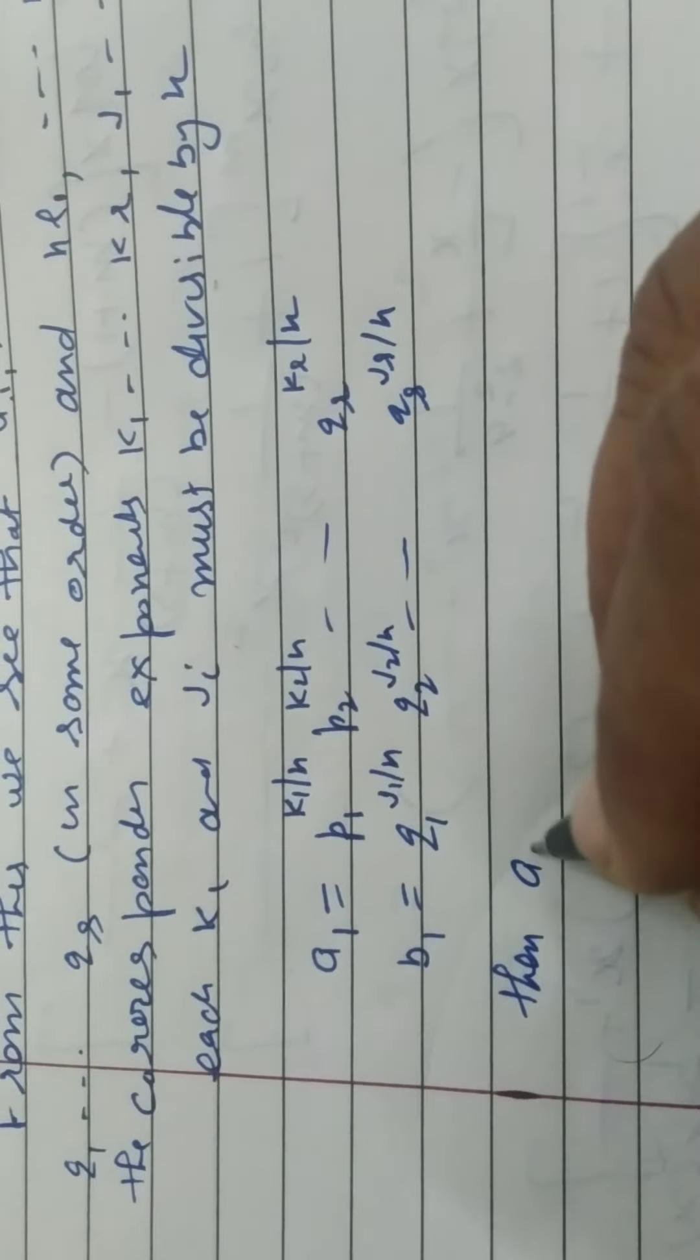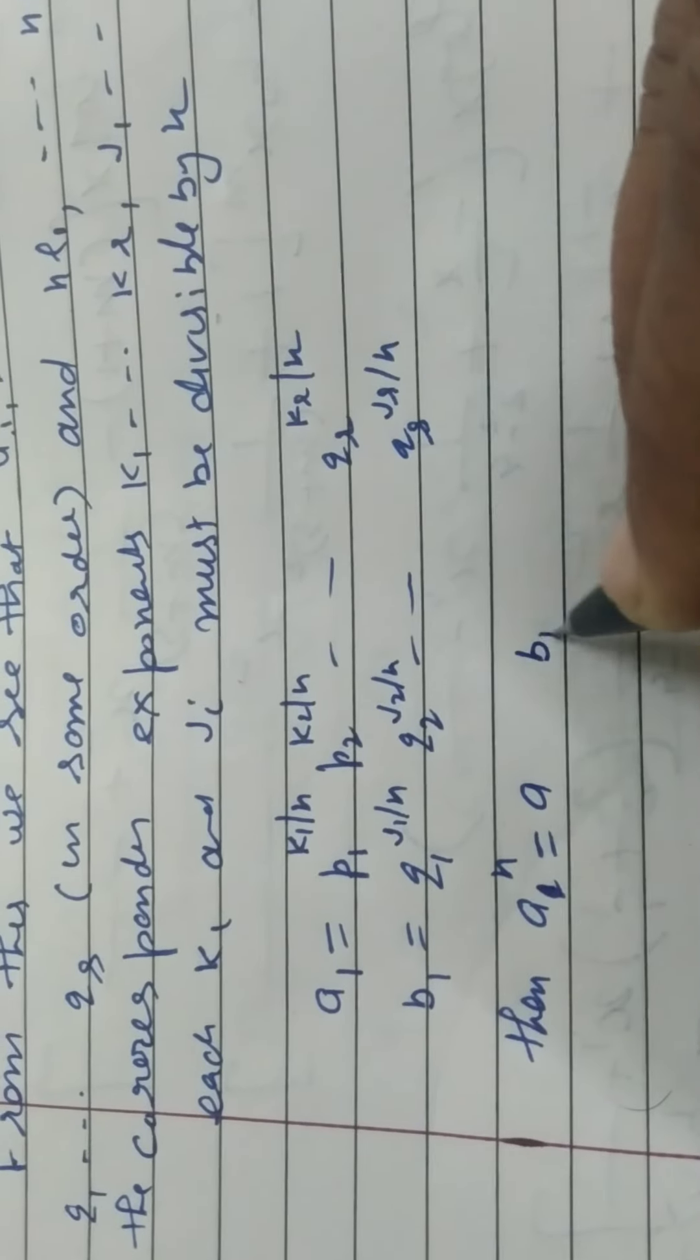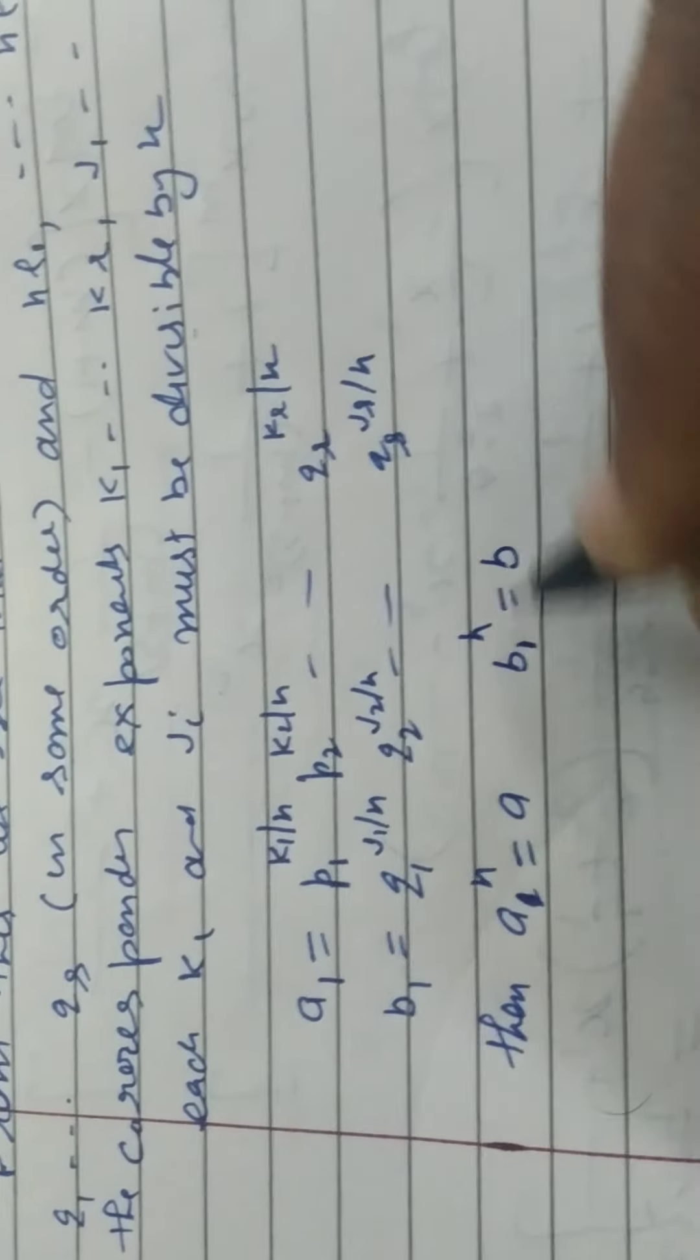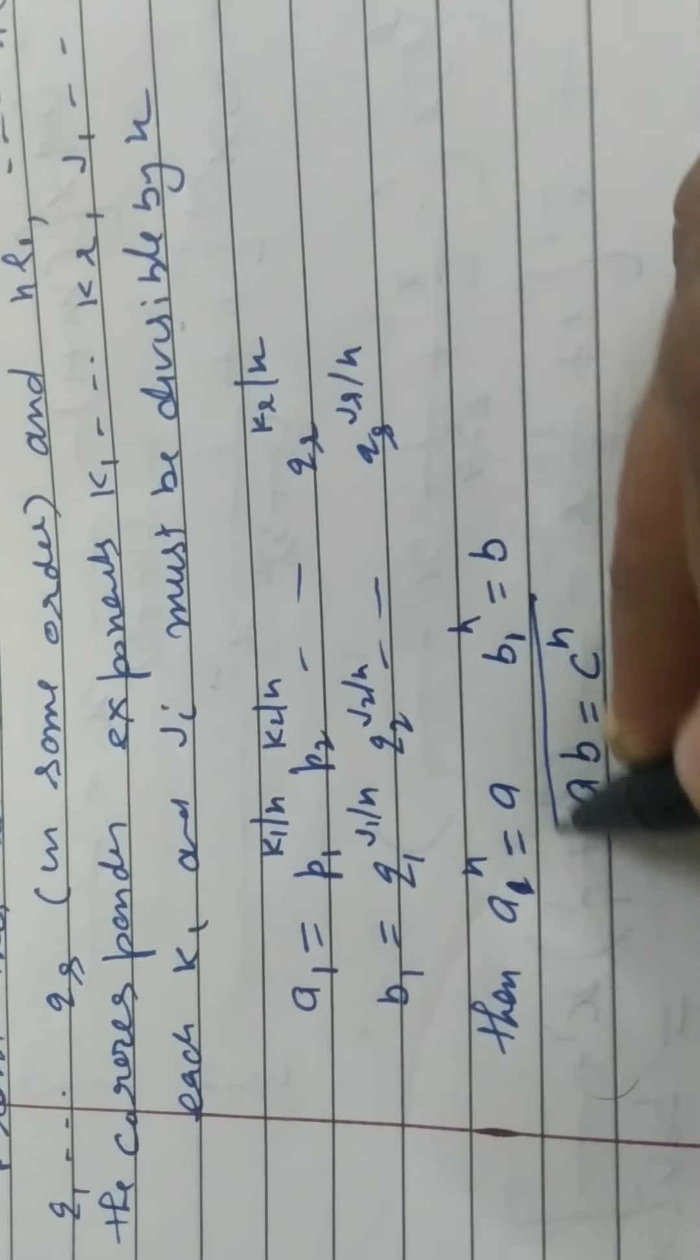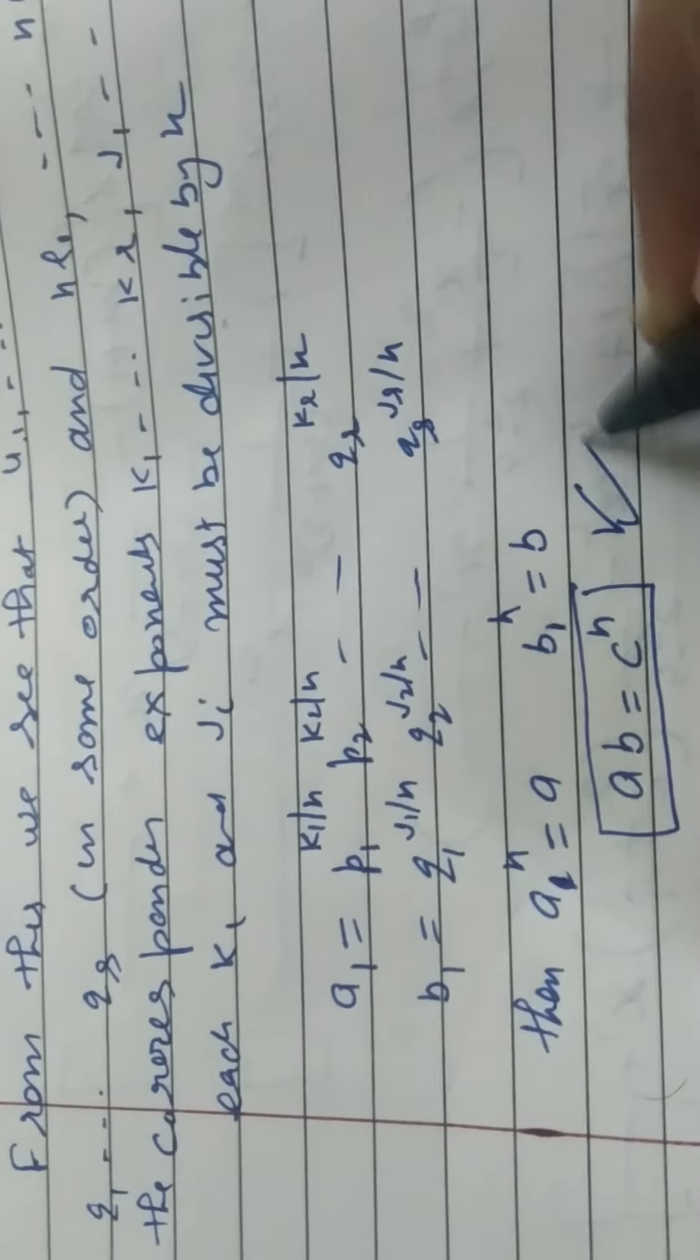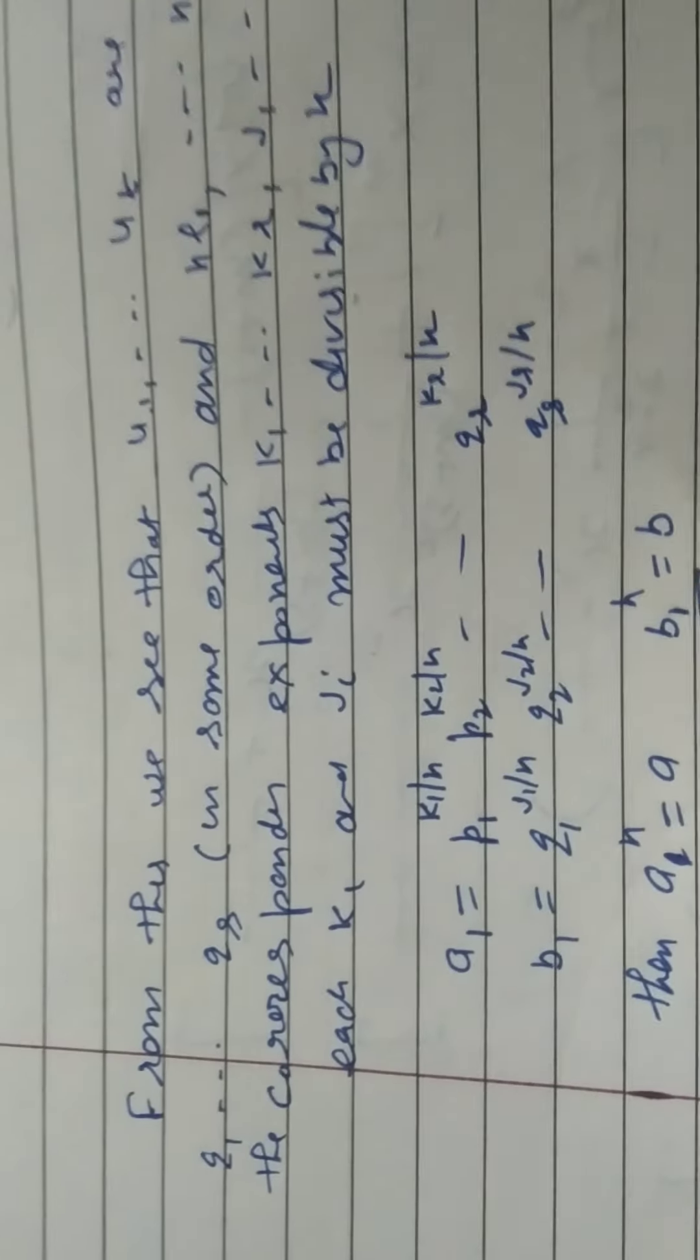Then, A1 raised to the power N, A होगा, B1 raised to the power N, B होगा. A, B की product क्या हो जाएगी, C raised to the power N. यही हमारा desired result था. Any doubt? Okay, next. अब हम अपनी main theorem की तरफ आ रहे हैं, how we can do main theorem, see this in detail.